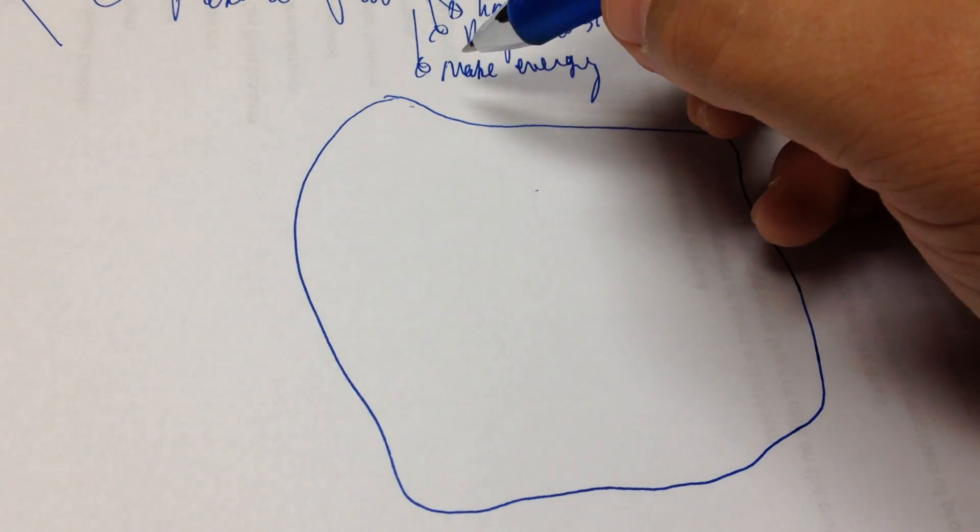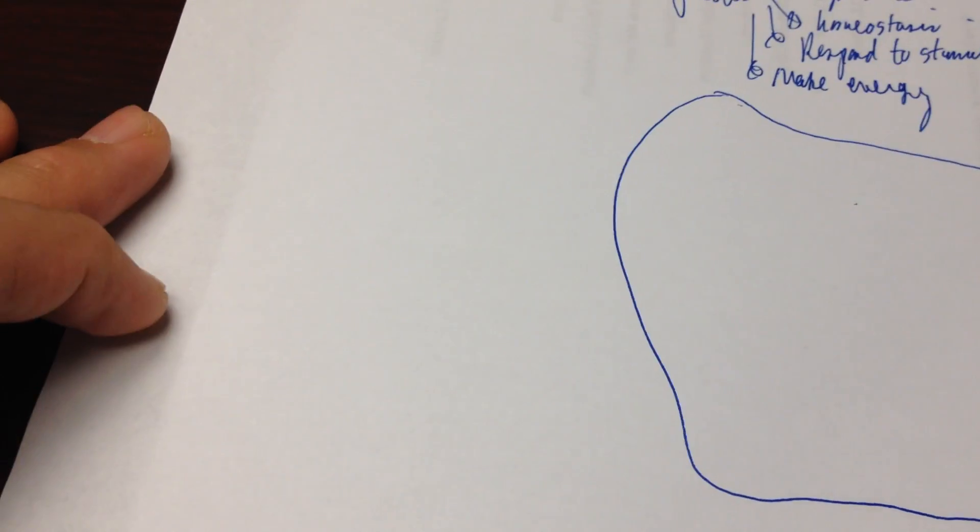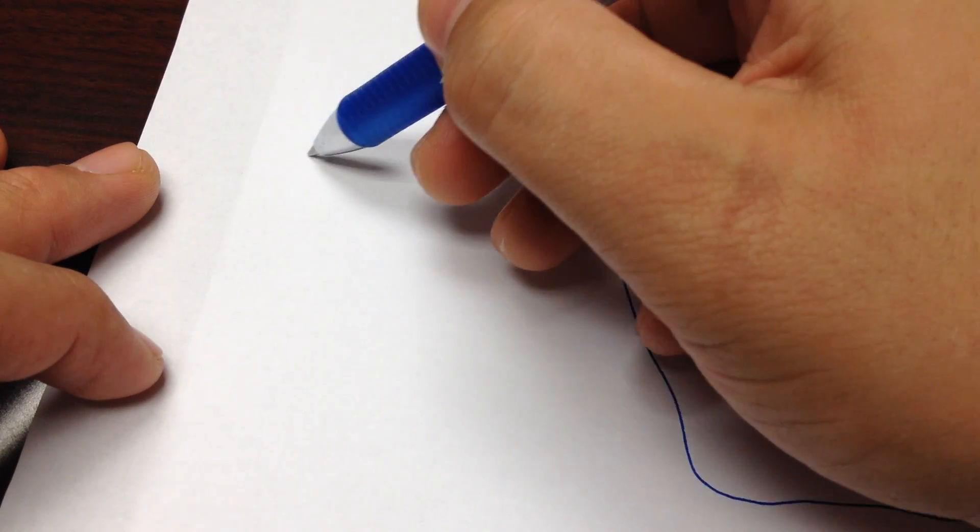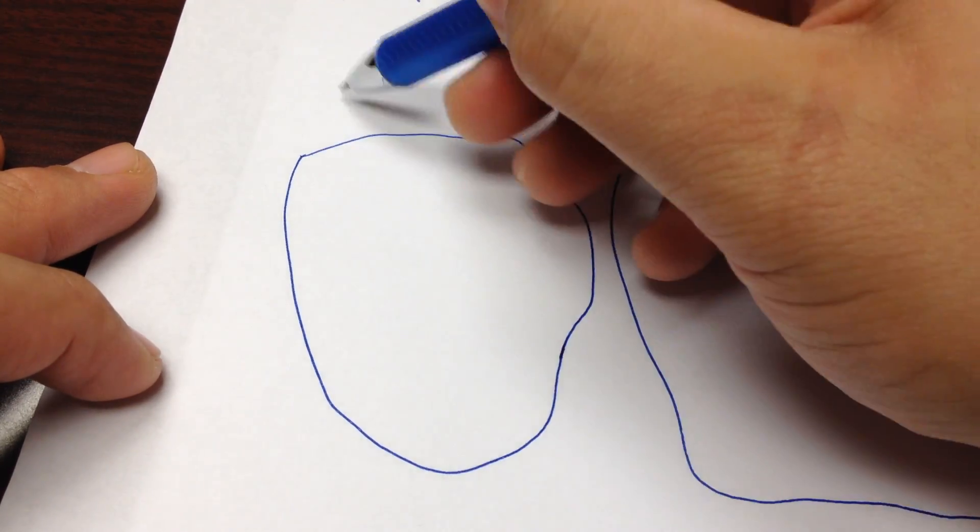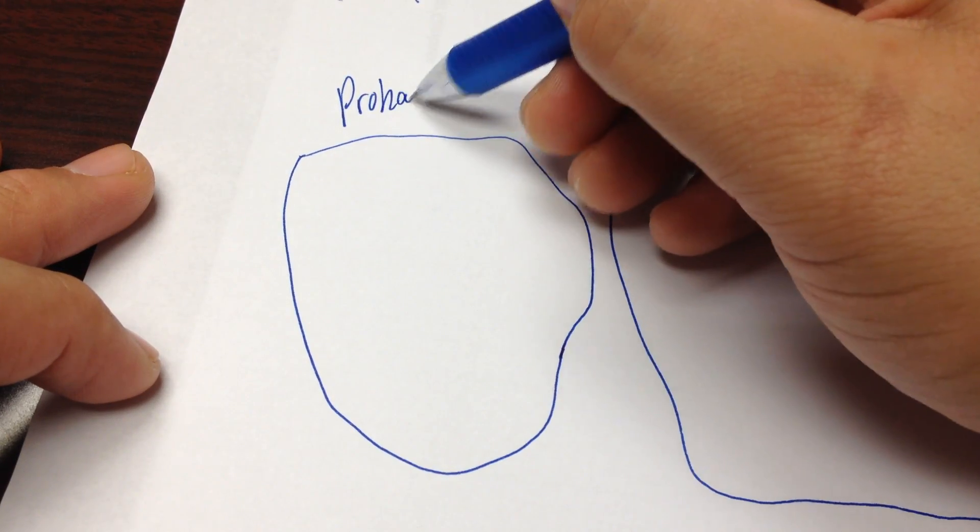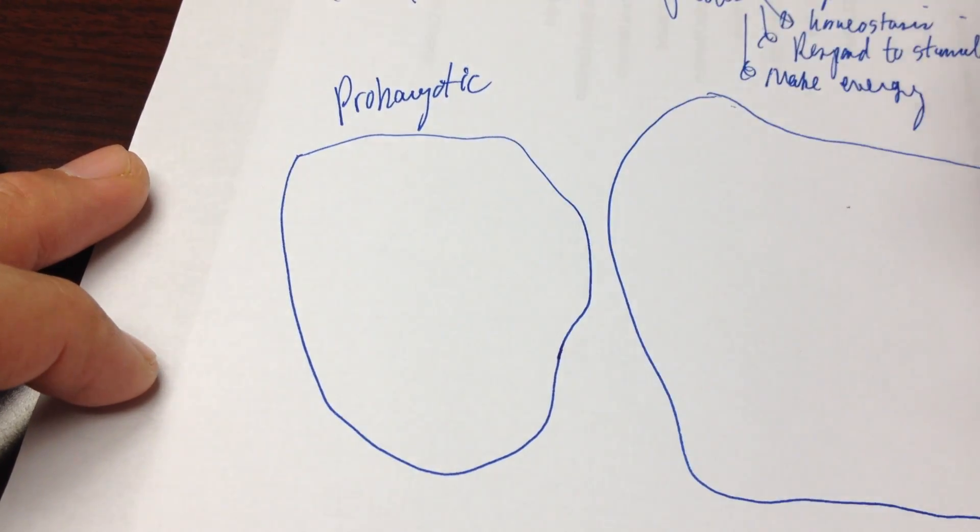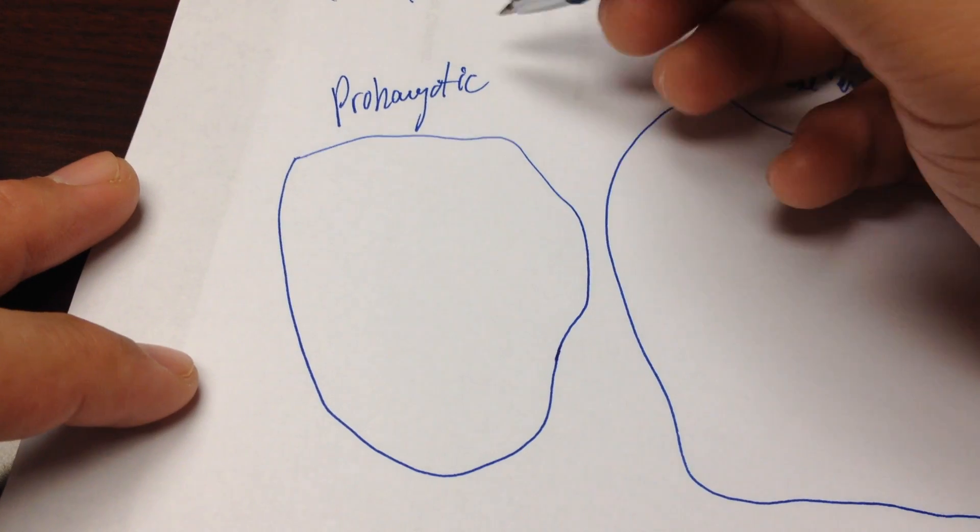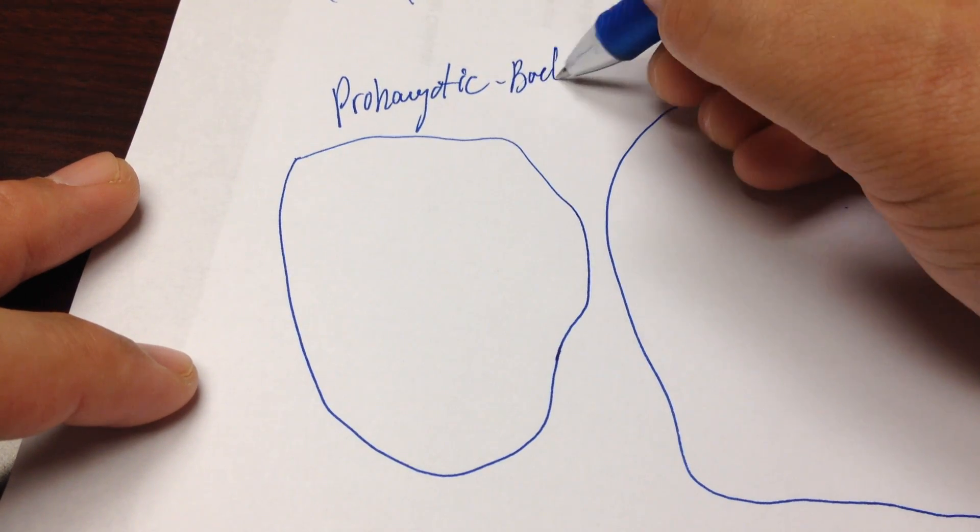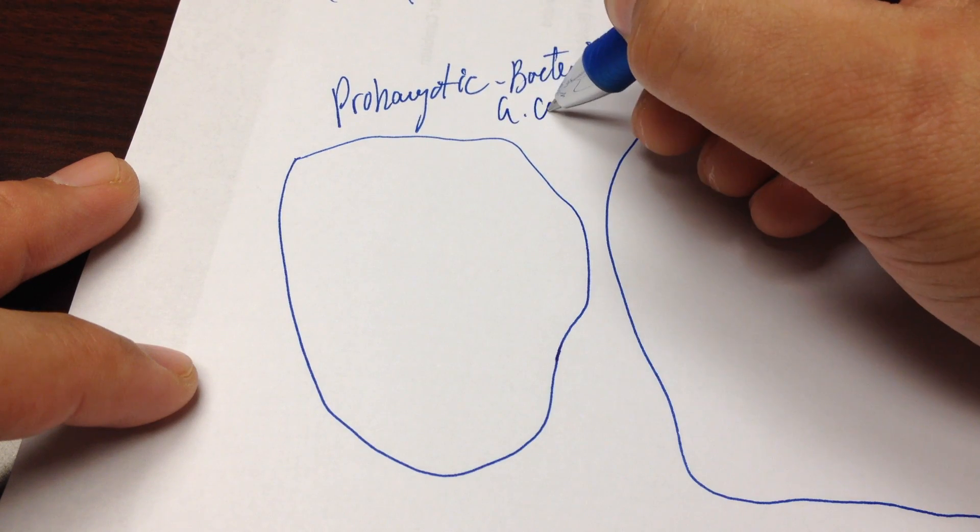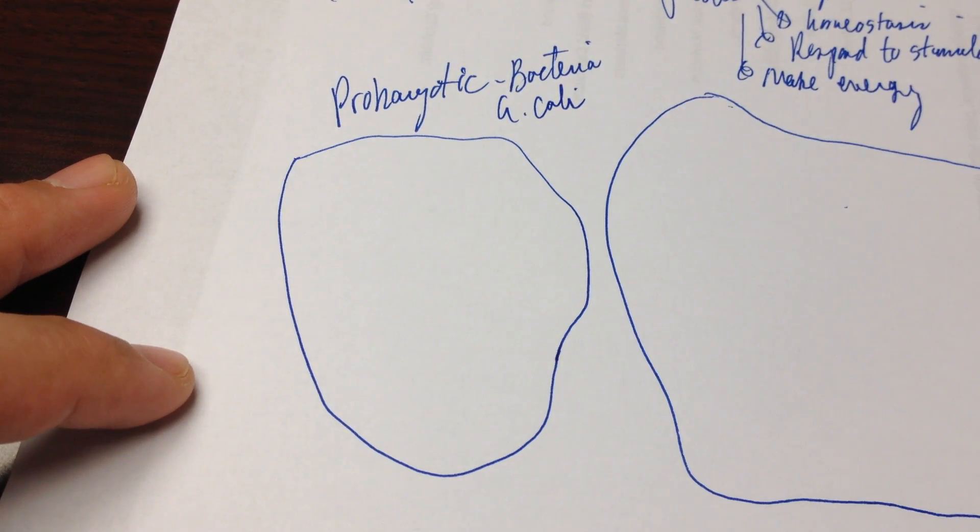Cells have a lot of unique attributes. Some of them are super simple. Some of them are super complex. You can have things like prokaryotic cells. I'll draw some prokaryotic cells over here. However, prokaryotic cells are the simplest. Hopefully you guys remember these include things like bacteria. We talked about E. coli in class as an example of this.